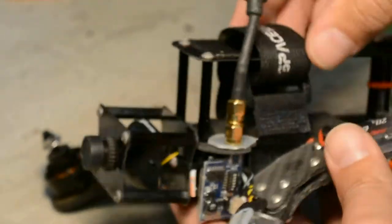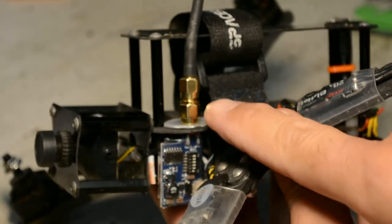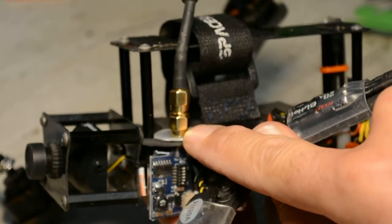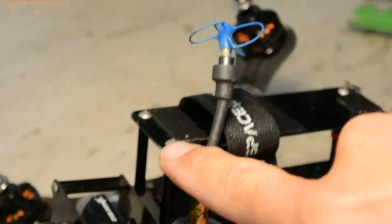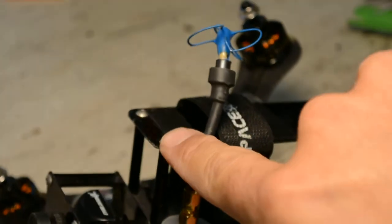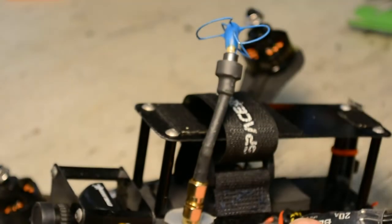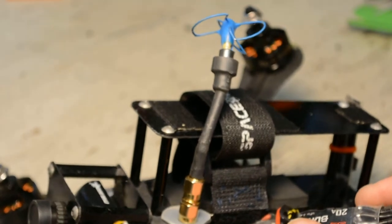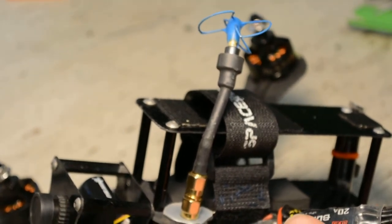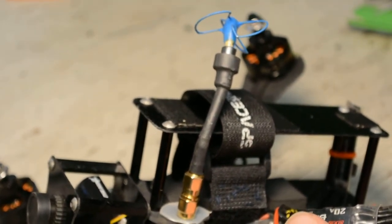I mounted the VTX a little lower. As you see here, I had it on the top initially, but it sticks up quite a ways. So whenever you crash, you're taking out your antenna, and I'd rather not take out the antenna. This one's a Bluebeam Ultra Airscrew.